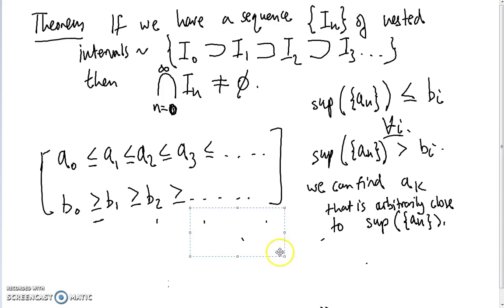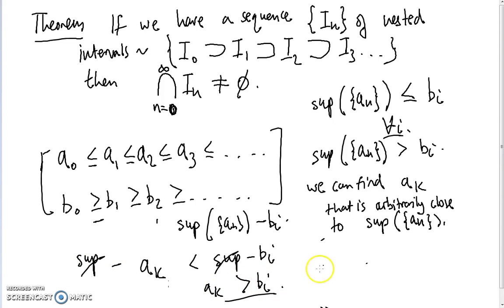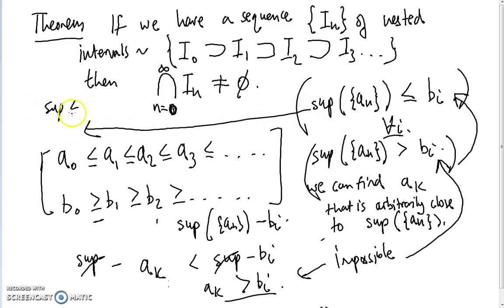In which case we can let our epsilon be sup{a_n} - b_i. So in other words there's some a_k where sup{a_n} - a_k is less than sup{a_n} - b_i, which means that a_k is greater than b_i. Earlier we proved that this is impossible, which refutes our hypothesis, which means that this must be true. So the supremum is less than or equal to b_i for all i and by definition is greater or equal to a_i for all i. So we found something that is in every single nested interval.